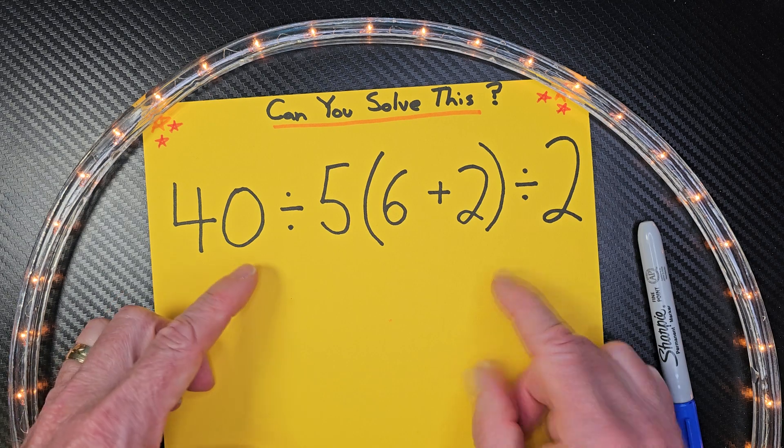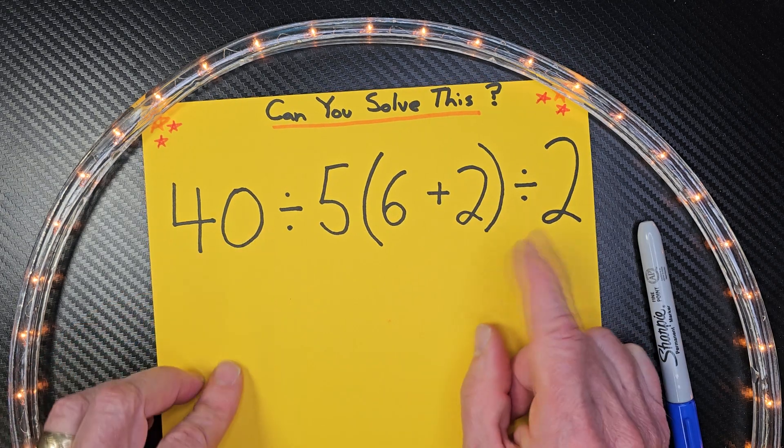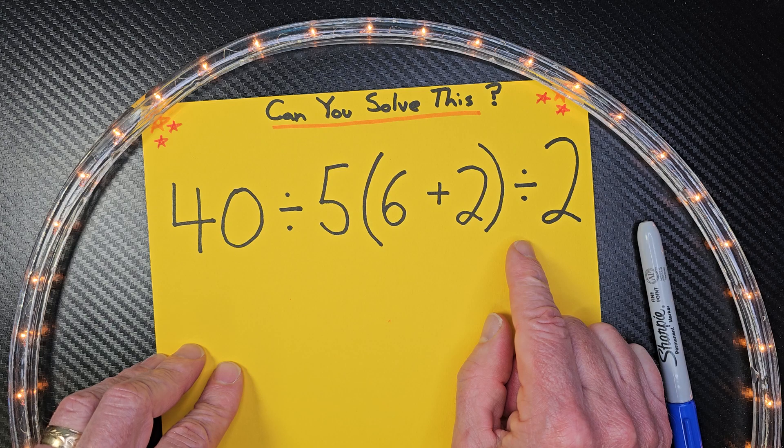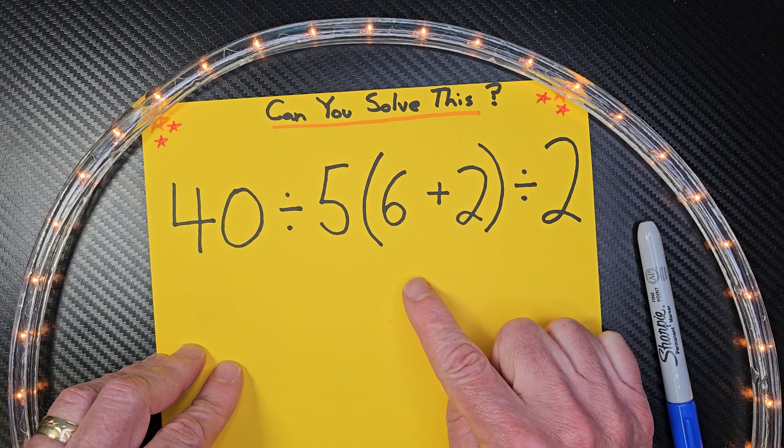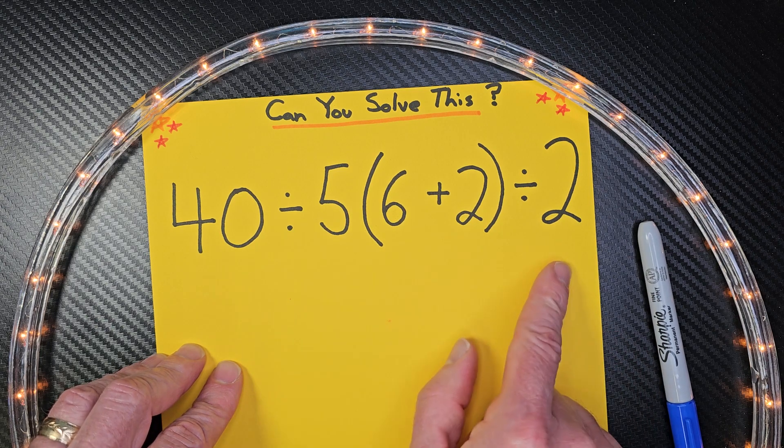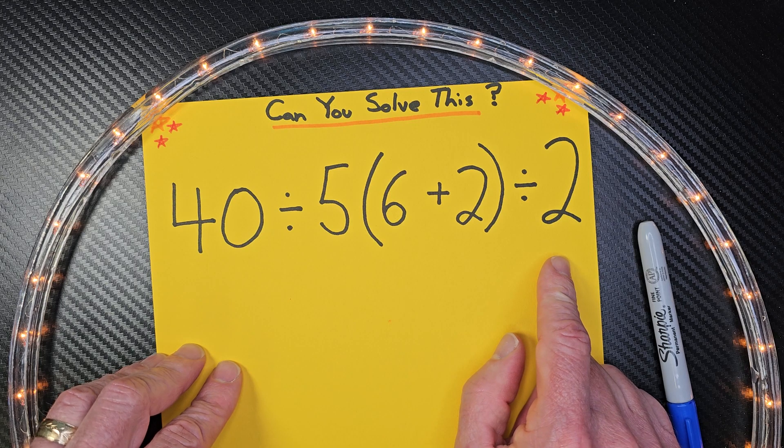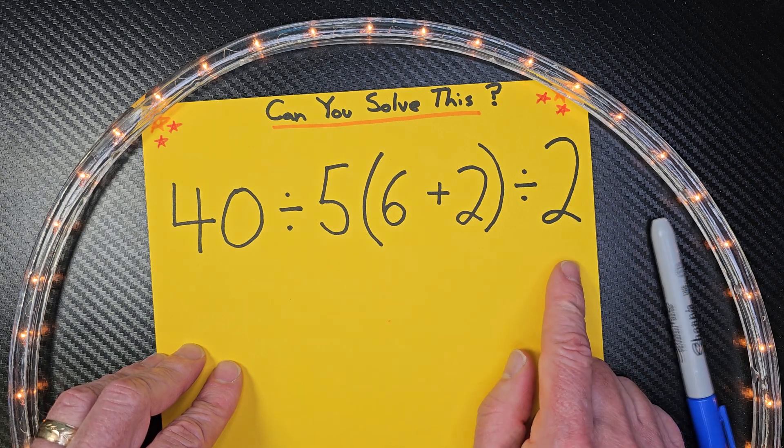With order of operation, you always do what's inside parentheses first, and then exponents for the second step. Third step, multiplication and division from left to right. And then our fourth step is addition and subtraction from left to right.